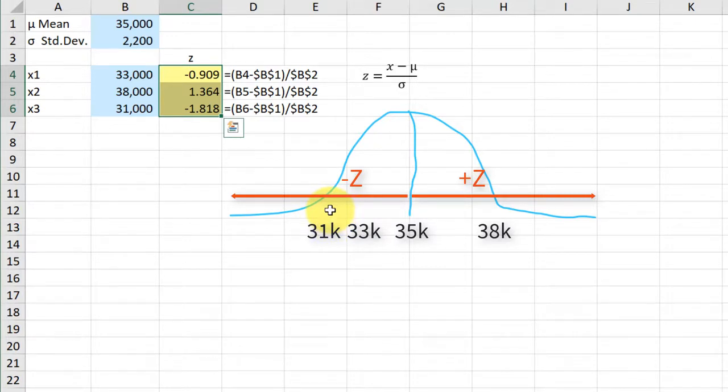That's a common mistake that I see with students. They don't draw the curve, and then they reverse mu and x, and so they will get the Z-scores wrong.